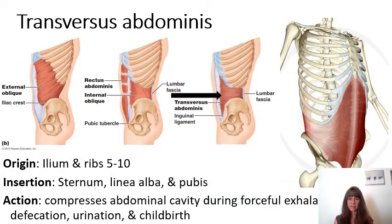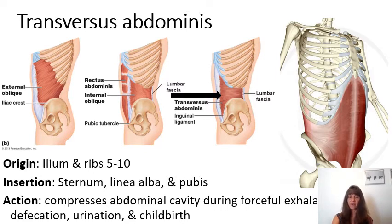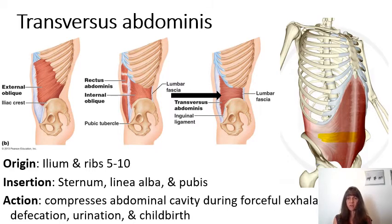The deepest of all muscles in the abdominal wall is the transversus abdominis. You can see it on the far right and observe how its fibers run transversally across the abdomen for the most part. Transversus abdominis compresses the abdomen, which is important during forceful exhalation, defecation, urination, and childbirth.